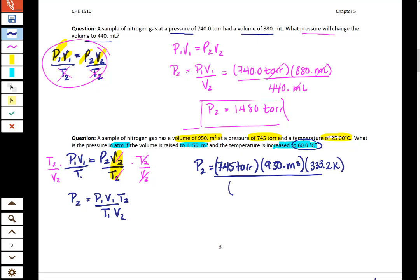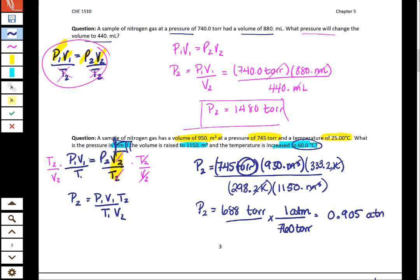T2 is your 60 degrees Celsius. When we change 60 degrees Celsius to Kelvin it's 333.2 Kelvin. We'll put in our T1 at the bottom, that is going to be 298, and our V2 at the bottom as well. We put all that in our calculator noticing that our units are canceling. When we get it we get about 688, and that's in torr. If we don't want it to be in torr because the question asked us for atmospheres, we need to do a quick conversion. There are 760 torr in one atmosphere, so we take our 688 and divide it by 760 to get 0.905 atm as our final answer.